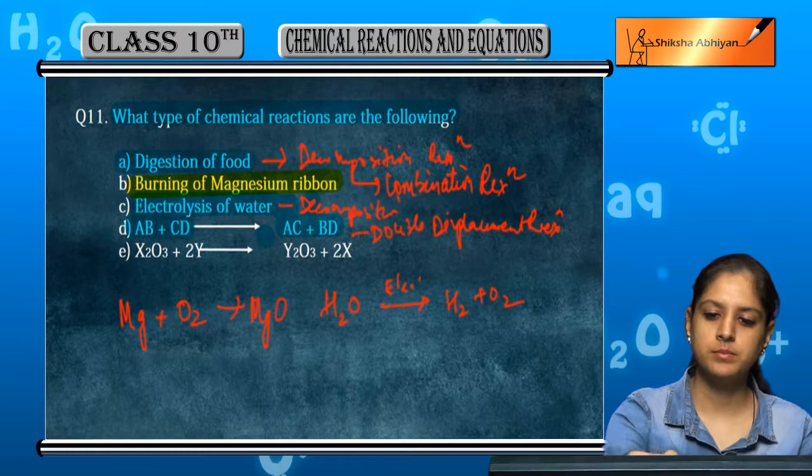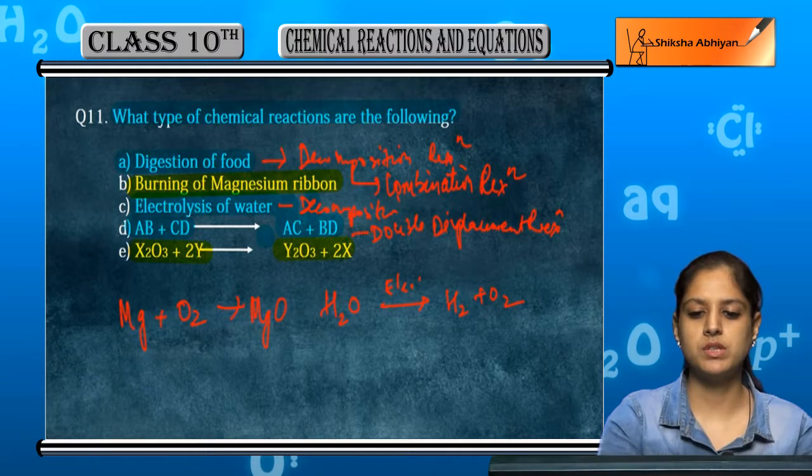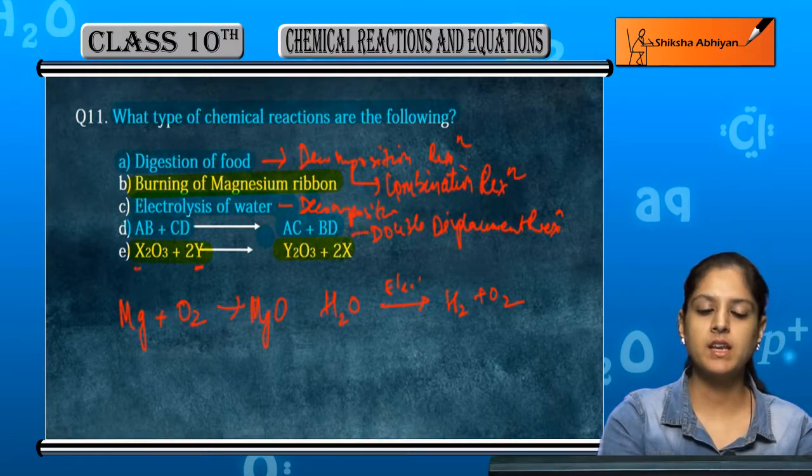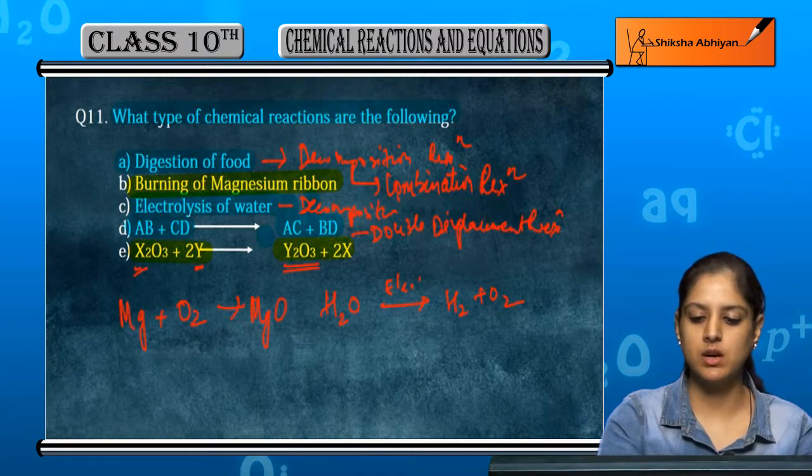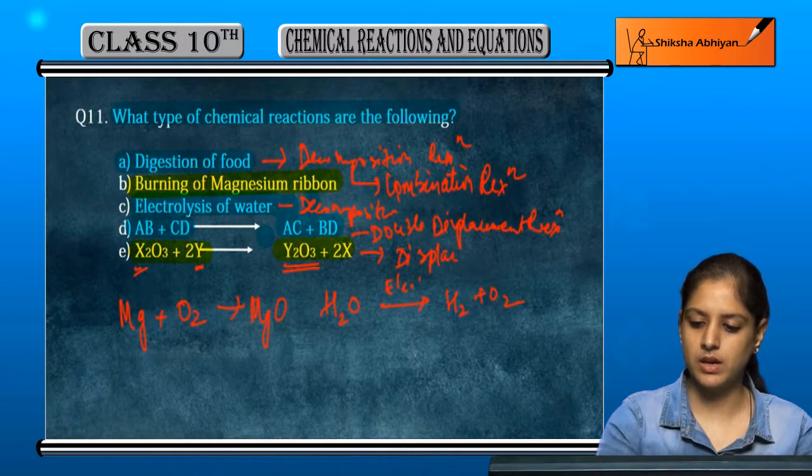Last is X2O3 plus 2Y gives Y2O3 plus 2X. This is a displacement reaction. Thank you.